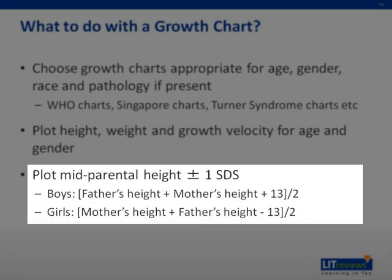It is necessary to calculate the gender-specific mid-parental height as well as the target centile range, defined as values ±1 standard deviation from the mid-parental height. For a boy, mid-parental height is calculated by averaging his father's height and the mother's masculinized height — that is, by adding 13 cm to her actual height — and the target centile range is ±6.5 cm from this value. For a girl, 13 cm must be deducted from the father's height before averaging it with the mother's height.